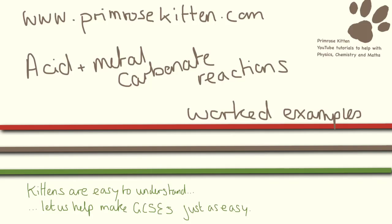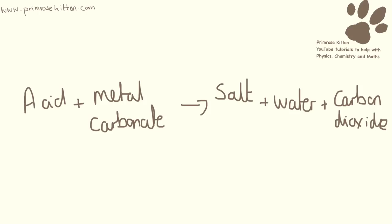You need to know what happens when an acid reacts with a metal carbonate. Whenever we react an acid with a metal carbonate, we are going to have three things produced: a salt, water, and carbon dioxide.